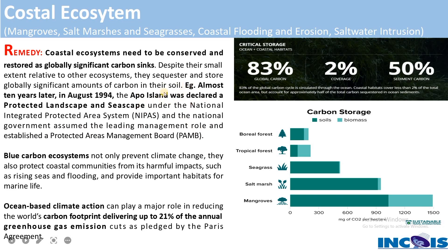After such protective practices, Apo Island became a recognized marine protected area. The blue carbon ecosystem is very significant in controlling and mitigating climate change consequences by storing excess carbon released into the atmosphere. Some ocean-based climate action can play a major role in reducing the global carbon footprint, delivering up to 21% of annual greenhouse gas emission cuts as pledged by the Paris Agreement.